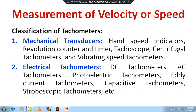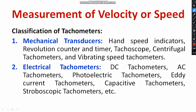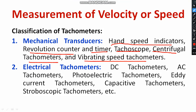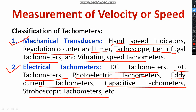Under mechanical transducers, there are subdivisions like hand speed indicators, revolution counter and timer, tachoscope, centrifugal tachometers, and vibrating reed tachometers. If I talk about electrical transducers, there are methods such as DC tachometers, AC tachometers, photoelectric tachometers, eddy-current tachometers, capacitive tachometers, and stroboscopic tachometers.